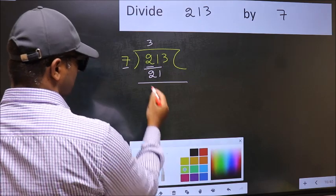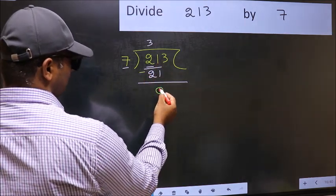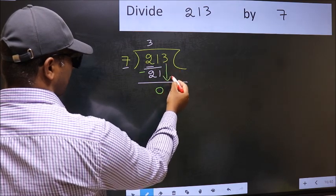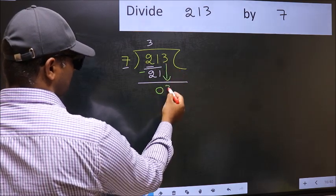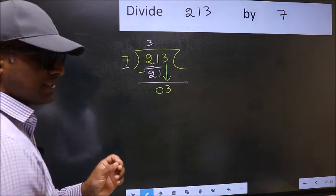Now you should subtract. 21 minus 21, 0. After this, bring down the next number. So 3 down. After this step, the mistake happens.